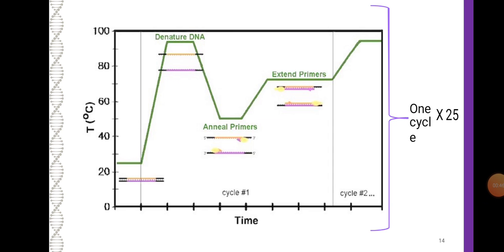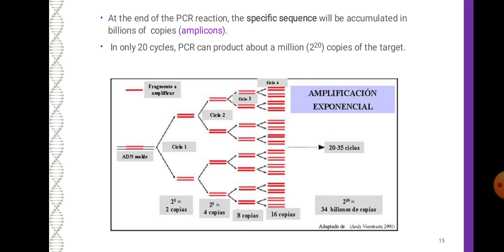A graph of the PCR cycle shows time on the x-axis and temperature on the y-axis. Denaturation occurs at 94–97 degrees Celsius, primer annealing at 50–65 degrees Celsius, and primer extension at 72 degrees Celsius. At the end of the PCR reaction, the specific sequence accumulates in billions of copies. In only 20 cycles, PCR can produce about one million copies of the target.